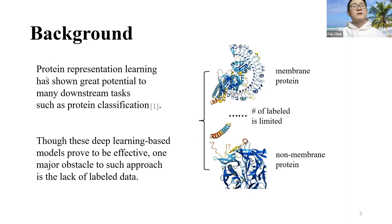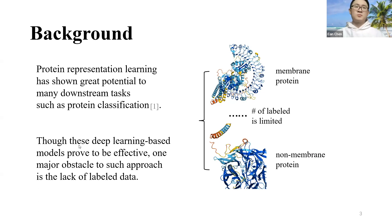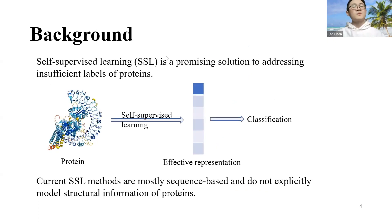Protein representation learning has shown great potential for many downstream tasks, such as protein classification — for example, binary classification of membrane versus non-membrane proteins. Previous deep learning-based methods have proved very effective, but one major obstacle is that the number of labeled data is limited. Self-supervised learning is a promising solution to addressing insufficient labeled proteins.